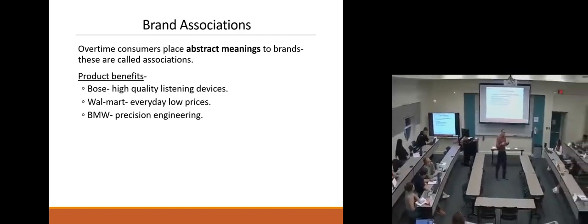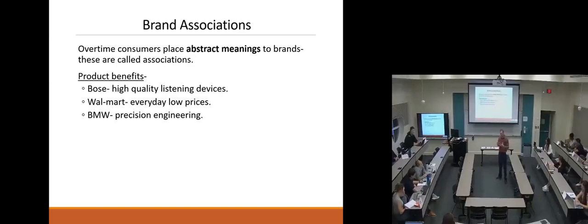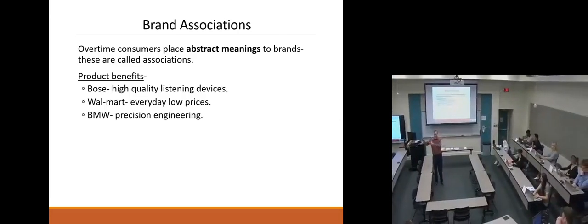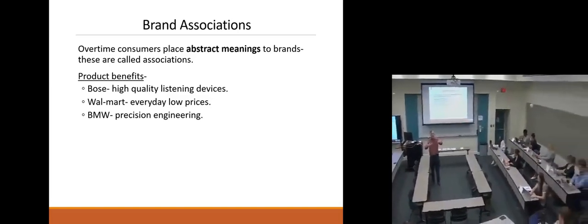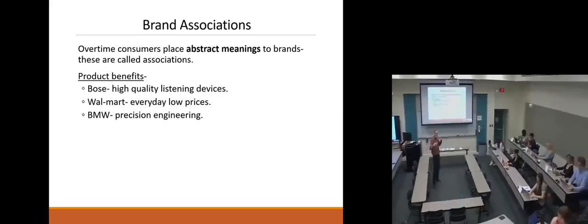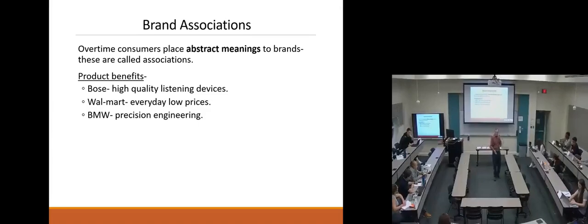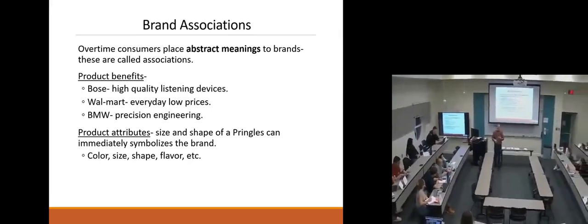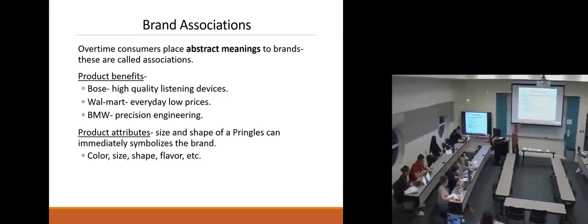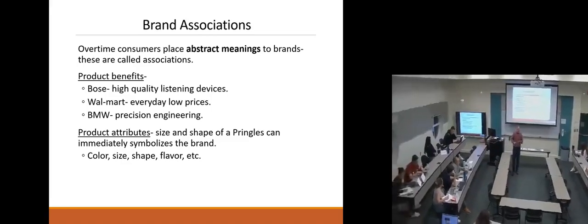There's an associative network theory where when we see something like a logo or a color in the context of something else, we form a connection between those two things. We associate that logo or color with something. So if you have an affinity for North Carolina and think of UNC basketball as super successful with a lot of national championships, when you see that North Carolina blue, you'll associate winning with it. Brand associations are things that we kind of think about.